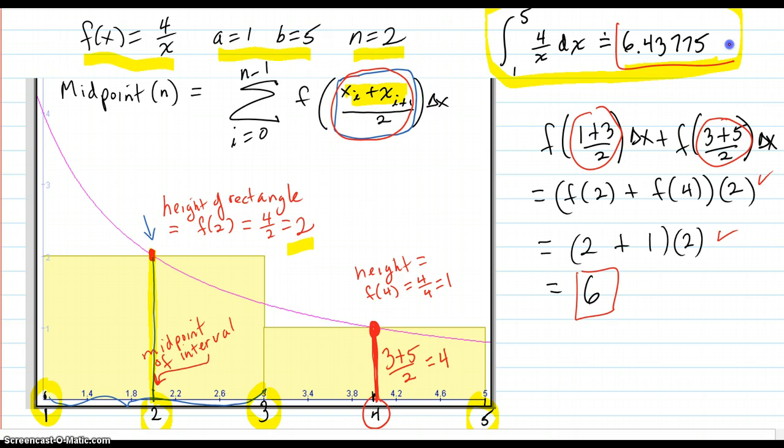Which compares pretty favorably to the actual true answer. It's only 0.4 something off. Certainly much better than the left and the right sum methods, because we're only using 2 sub-intervals there.